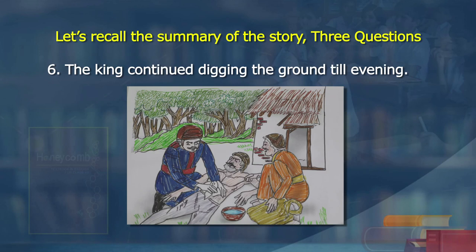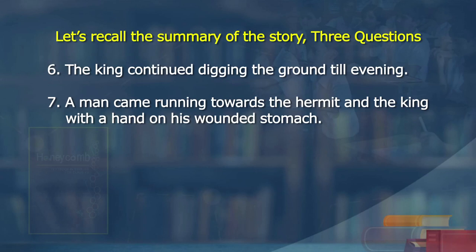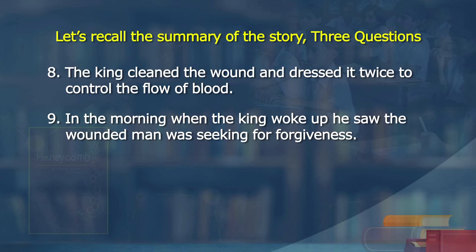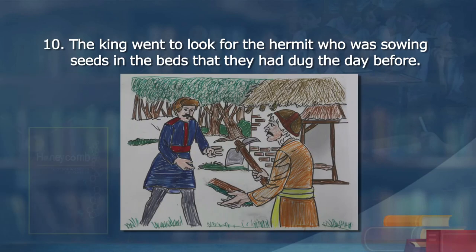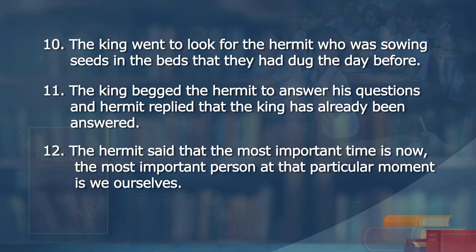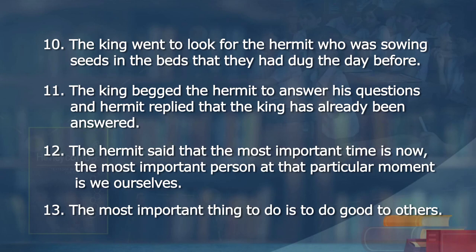The king continued digging the ground till the evening. The king took the shovel from the hermit and started digging. A man came running towards the hermit and the king with his hand on his wounded stomach. The king cleaned the wound and dressed it twice to control the flow of blood. In the morning, when the king woke up, he found that the wounded man was seeking forgiveness. The king went to look for the hermit, who was sowing seeds in the beds which they had dug the day before. The king begged the hermit to answer his questions, and the hermit replied that the king had already been answered. The hermit said the most important time is now; the most important person at that moment is those around us; and the most important thing to do is to do good to others.